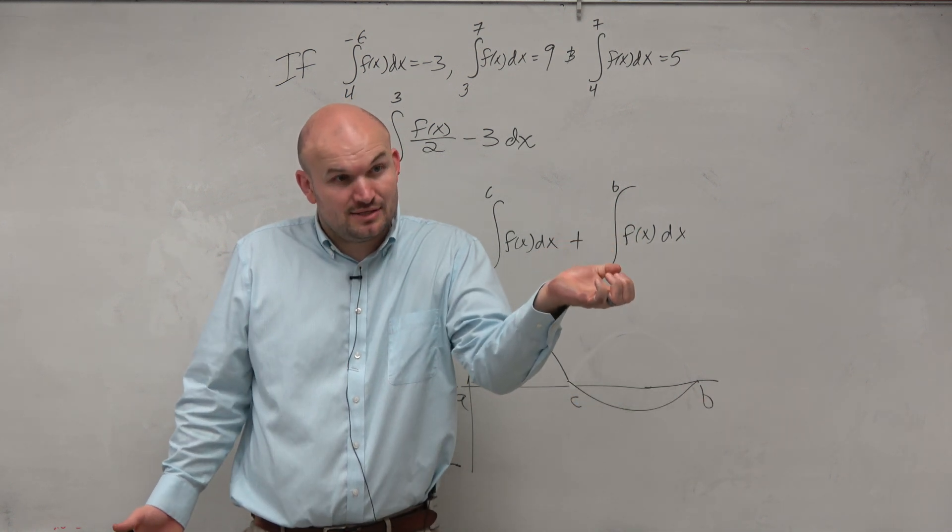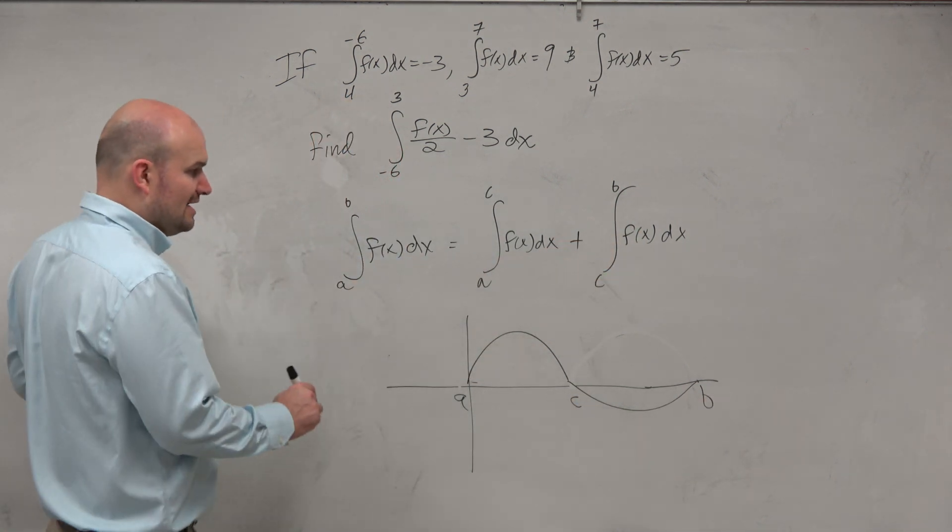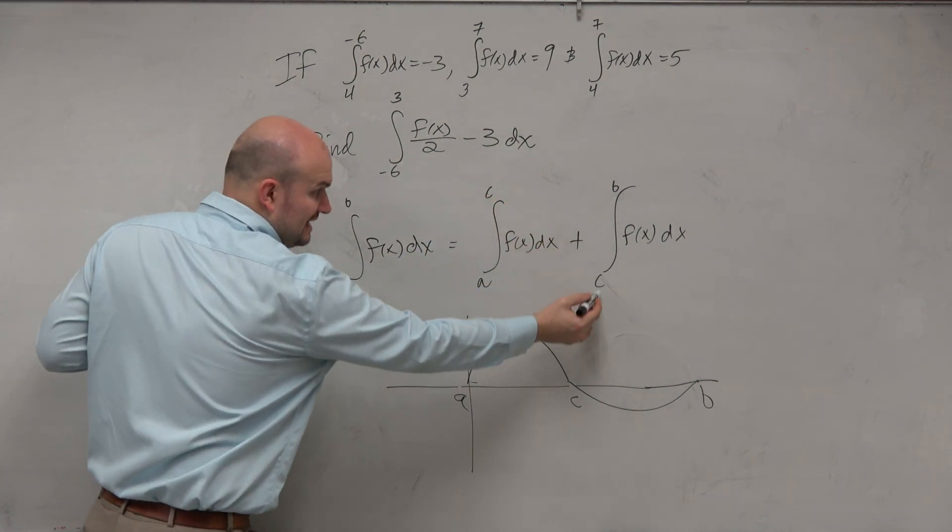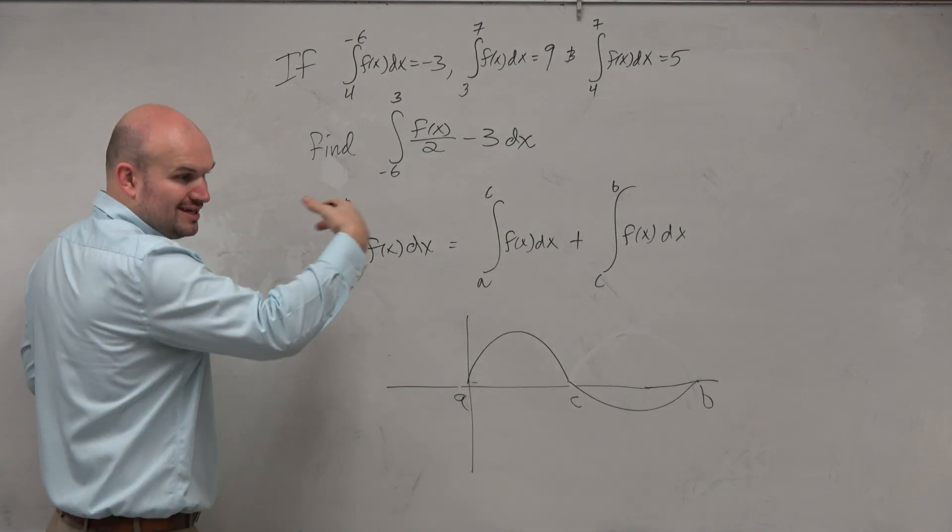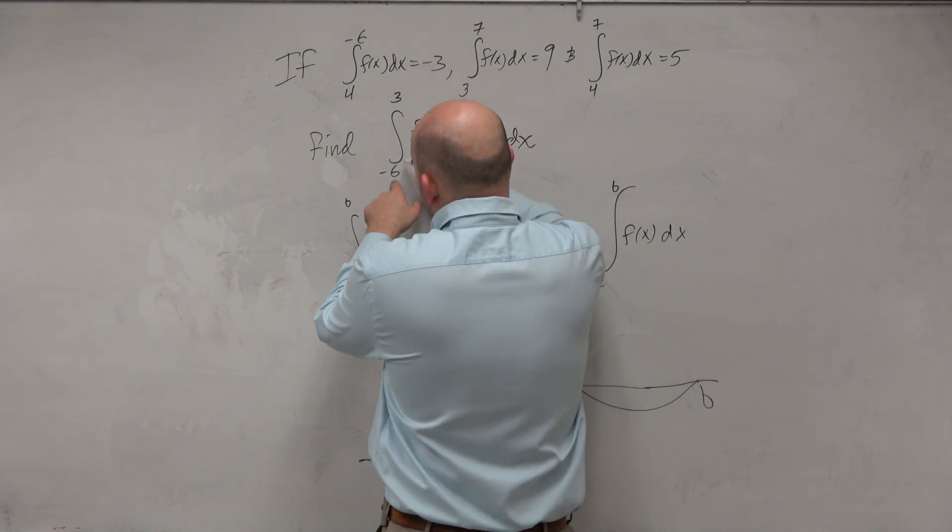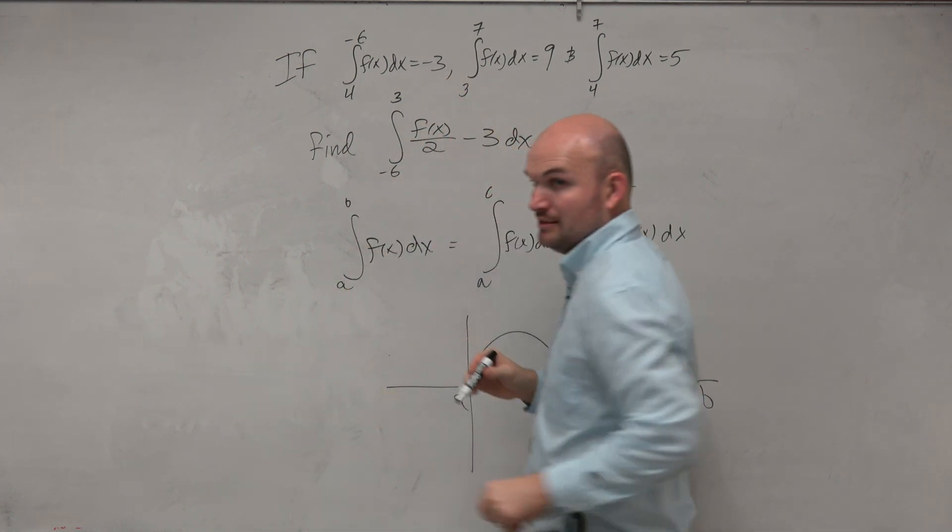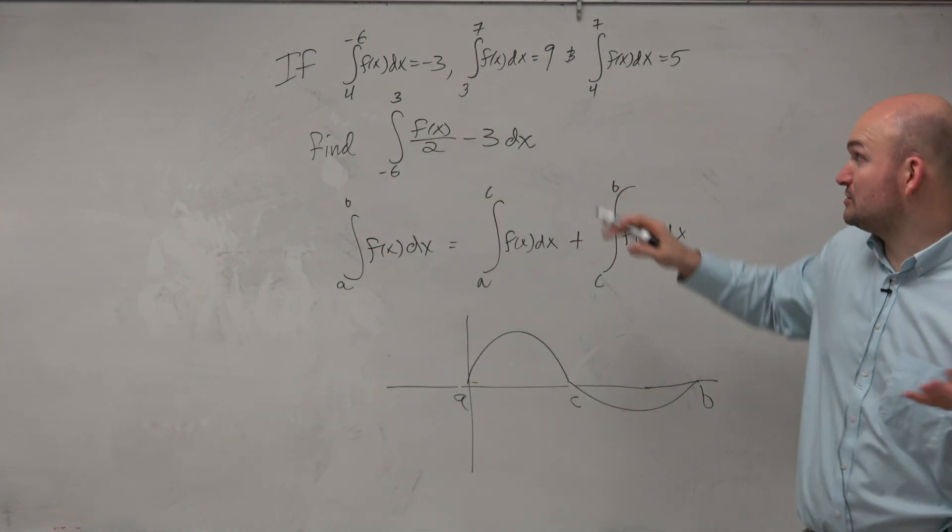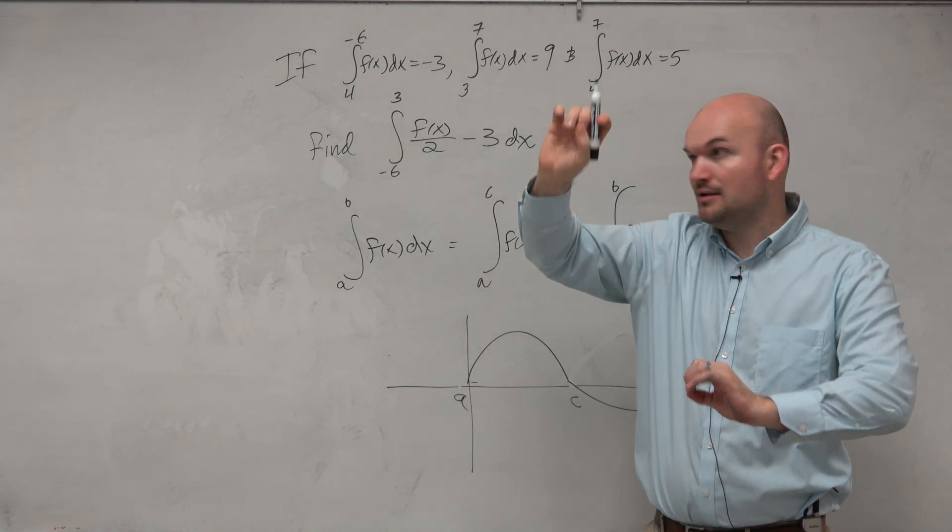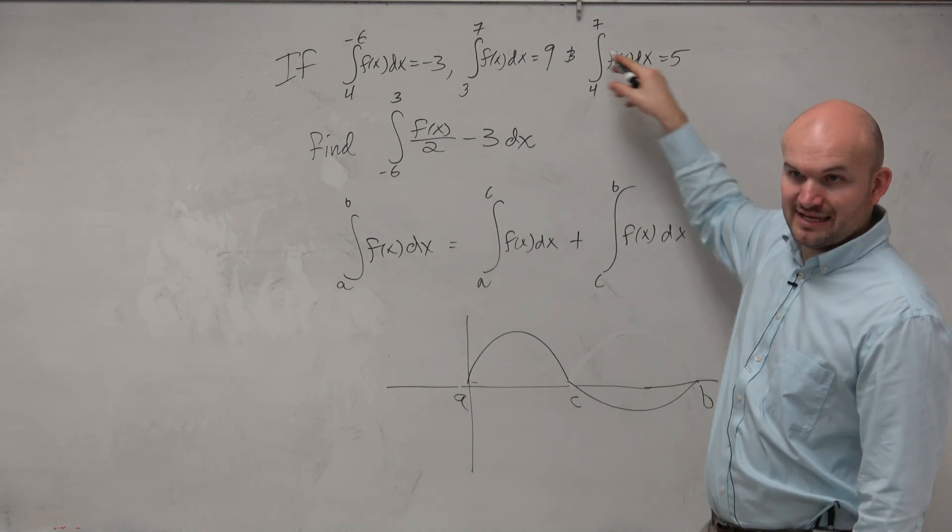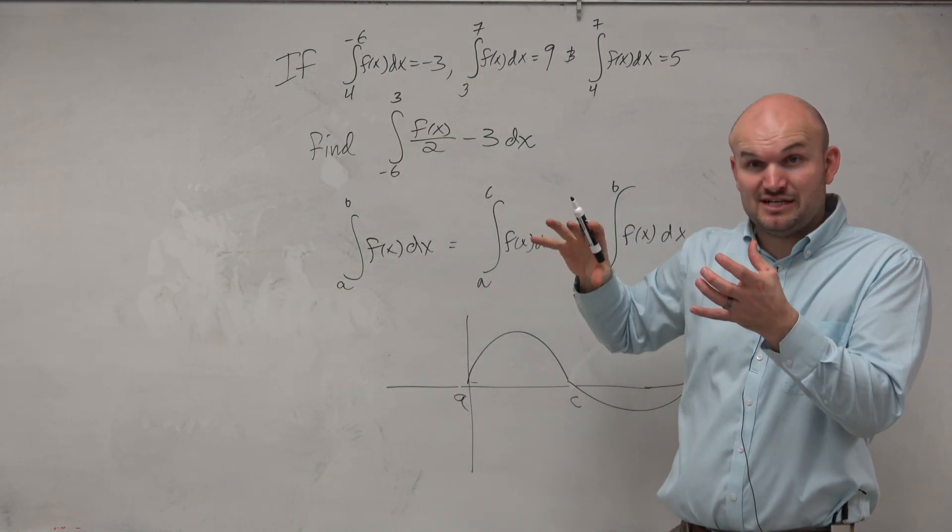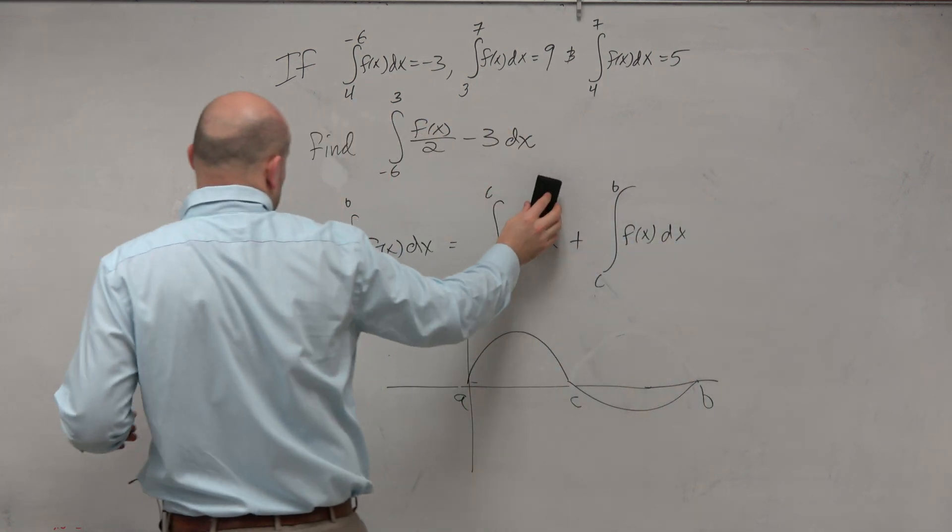It's really important that we notice this pattern here: a to c, c to b. So if we can create that connection, we can find our integral. Because what we're trying to do is go from negative 6 to 3. Somehow I've got to connect negative 6 to 3 with the information given.